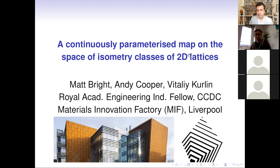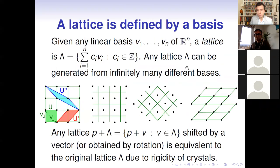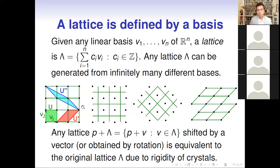I'll quickly remind you of key definitions. A lattice is defined by a basis, but the same lattice can be defined by infinitely many different bases. We could also shift our lattice, rotate it, and choose a different unit cell. These four pictures look rather different, however they represent equivalent lattices — equivalent up to rigid motion.